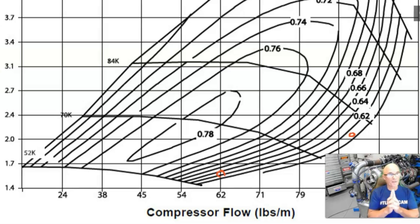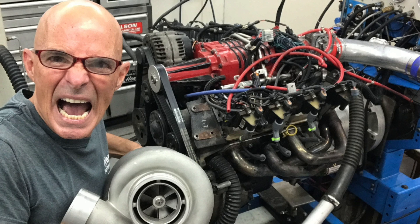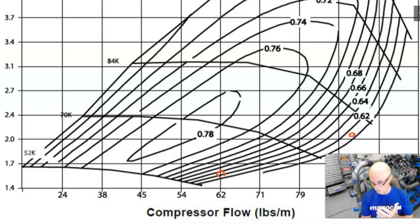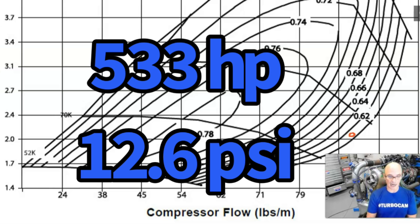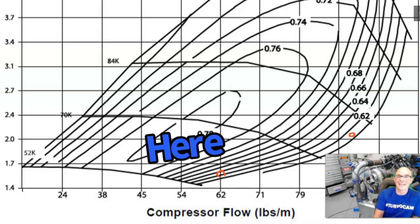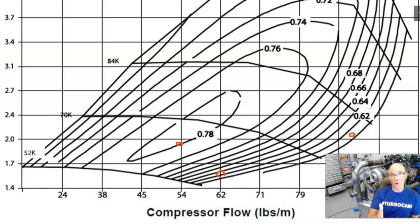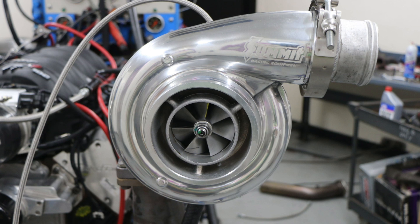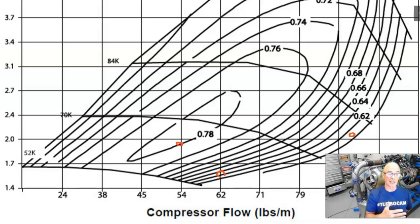The final example is the 3800 V6 that we also ran with a turbo. That combination produced 533 horsepower at 12.6 pounds of boost — a little less than our 2.0 pressure ratio. Plotting that puts us right in the 0.78 or 78% efficiency island. So a big turbo like this, making that kind of power at that boost level on the little 3800, puts it at 78% efficient — which is a pretty efficient level for that particular motor.